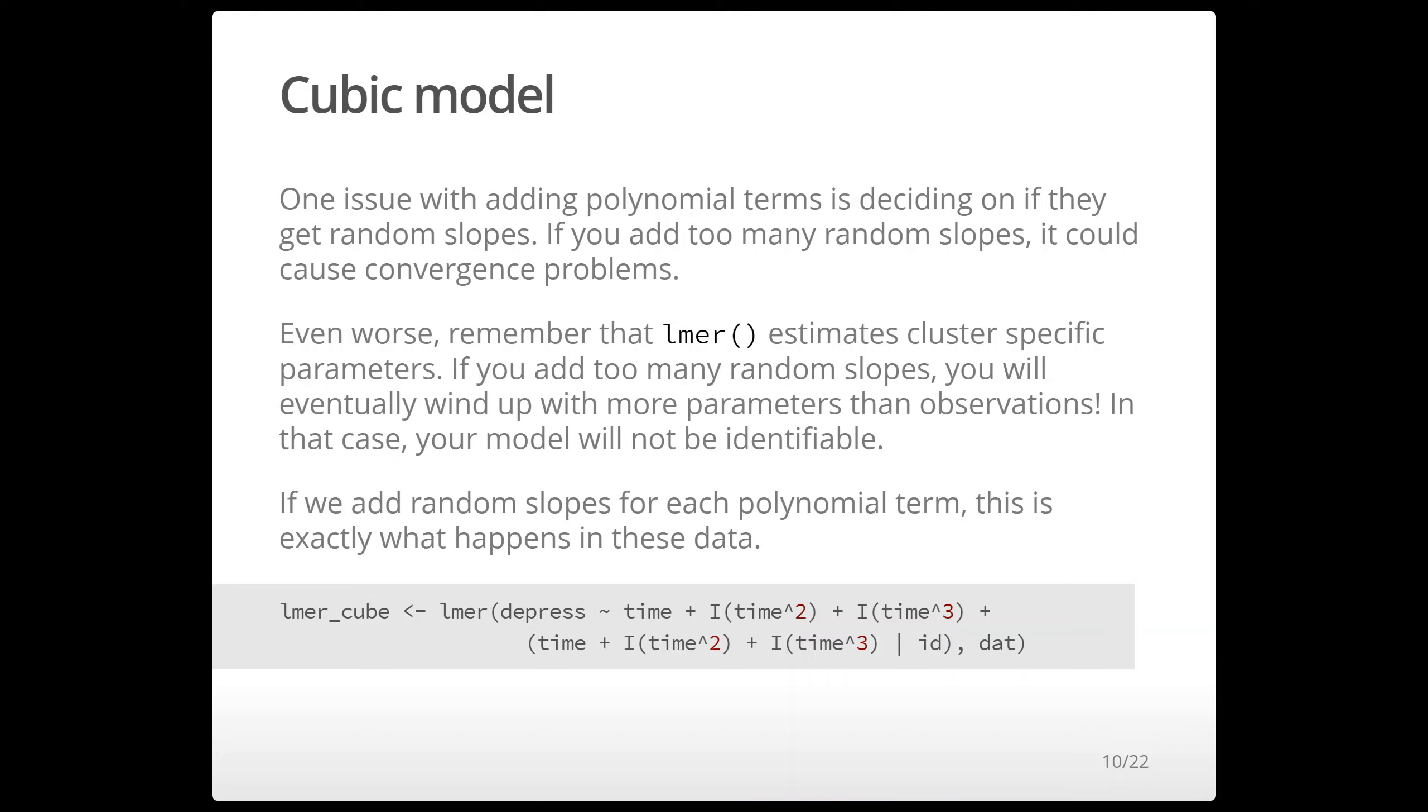When you don't have very many observations per cluster and you have lots of random slopes you're actually going to wind up with more parameters than observations and that actually is exactly what happens here if we try to include more than two random slopes in this model.